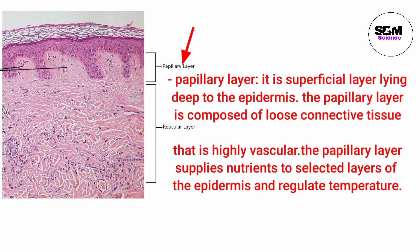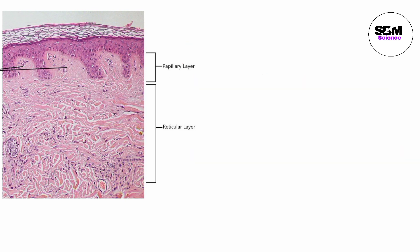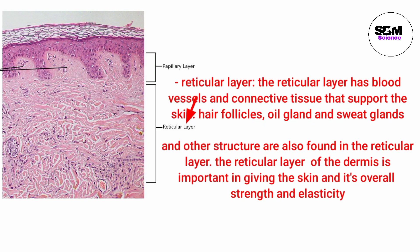The papillary layer is superficial, lying deep to the epidermis. It is composed of loose connective tissue that is highly vascular, and supplies nutrients to selected layers of the epidermis while regulating temperature. The reticular layer has blood vessels and connective tissue that support the skin, hair follicles, oil and sweat glands, and other structures. The reticular layer of the dermis is important in giving the skin its overall strength and elasticity.